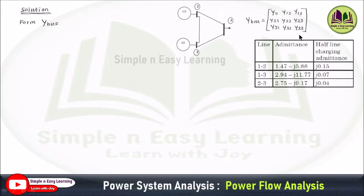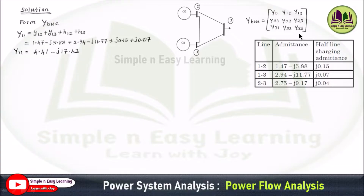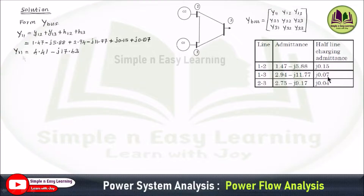We first determine the diagonal elements of the Y-bus matrix. Y11 equals the sum of admittances of all lines connected to bus 1, which are lines 1-2 and 1-3. That is 1.47 − j5.88 plus 2.94 − j11.77, along with the half-line charging admittances j0.15 and j0.07, giving Y11 = 4.41 − j17.43.